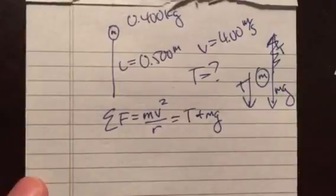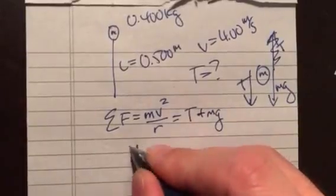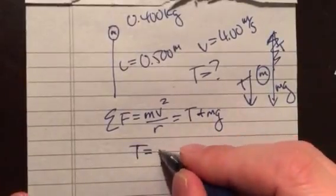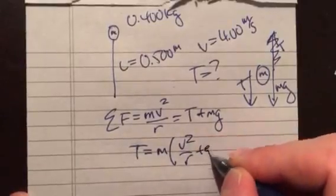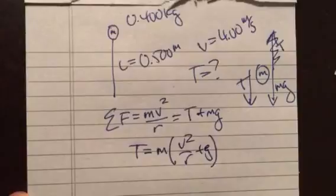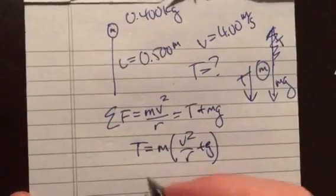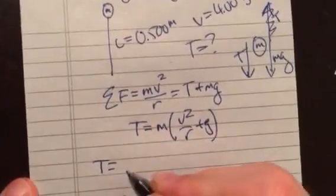We want to find out the tension, that's what it's asking, so let's solve for that. That's equal to the same thing we had in the last problem: m times v squared over r plus g.